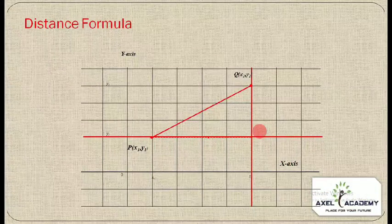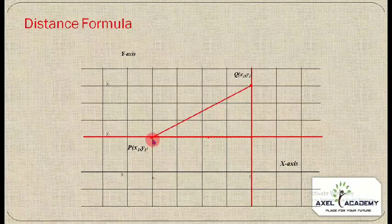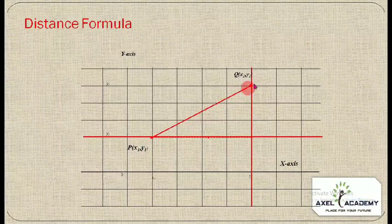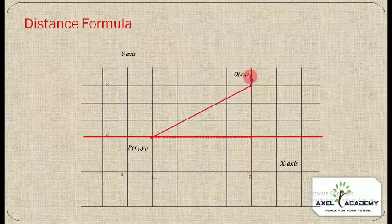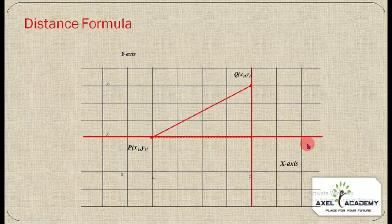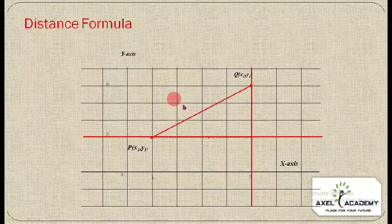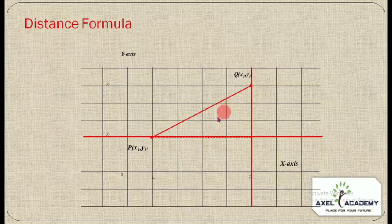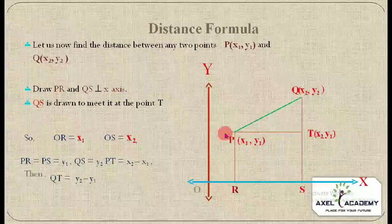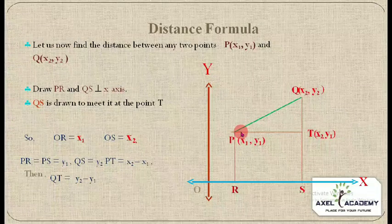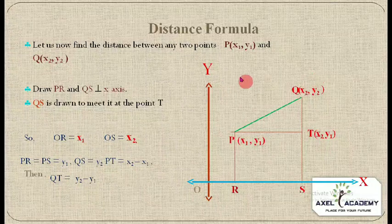Now let's study the distance formula. We will see how to find the distance between any two general points. Suppose we have point P(x₁, y₁) and point Q(x₂, y₂) on the coordinate plane. We need to find the distance between P and Q.